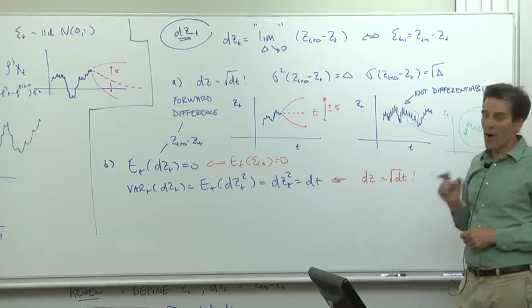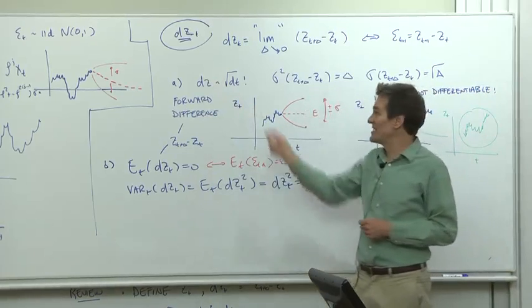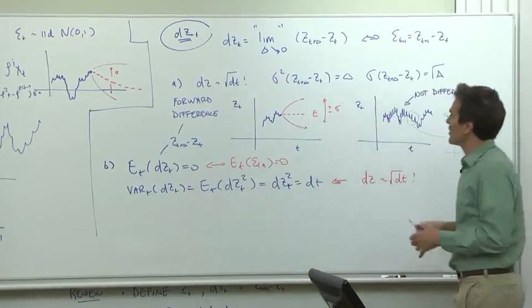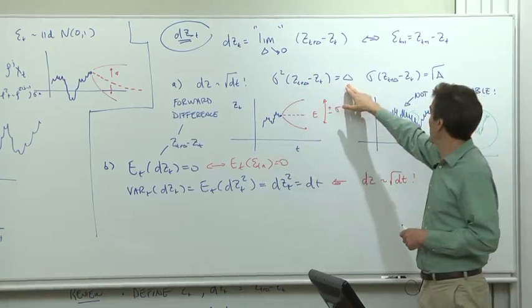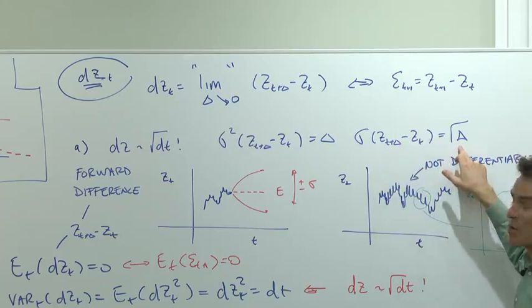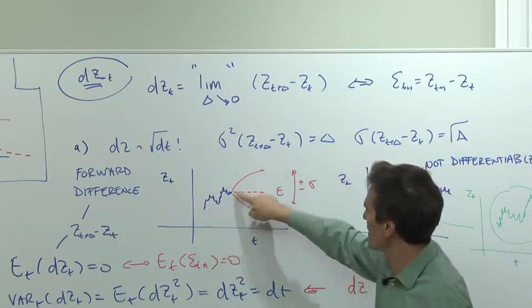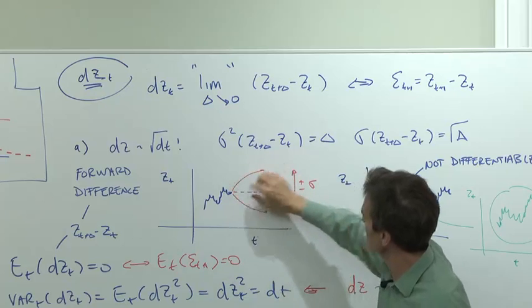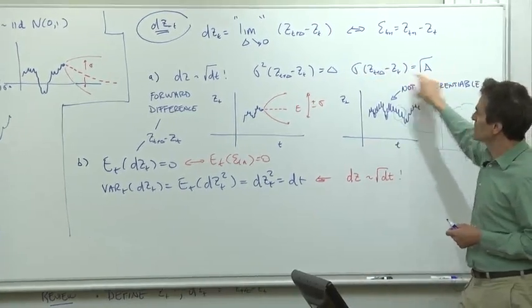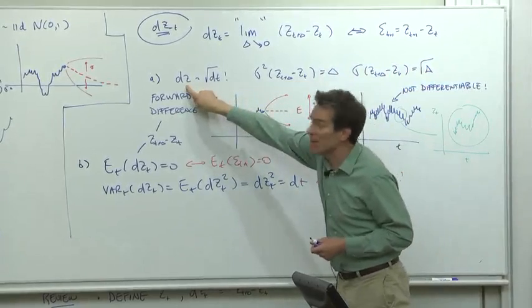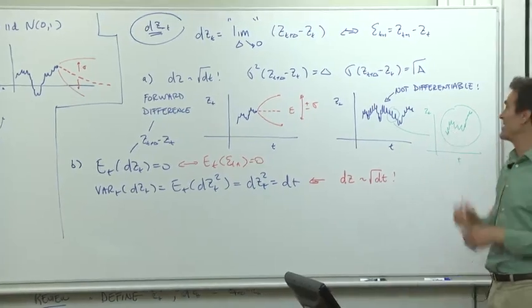Now, that's all simple, but it has some remarkable properties. First of all, dz is of size square root of dt. What do you mean? Let's just look at it. The variance of z_t+delta minus z_t is delta. That's how we defined it. Therefore, the standard deviation is square root of delta. And what does that mean? That means if you're looking at z at any time, and you're thinking about what it's going to do forwards, the typical size of deviations is the square root of how long you look out in front. Standard deviation is square root. Typical size is square root. That means the typical size of a dz is the square root of dt. That's a big number when dt gets very small.